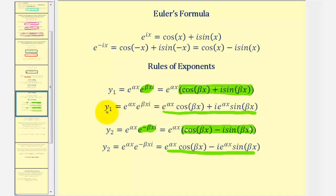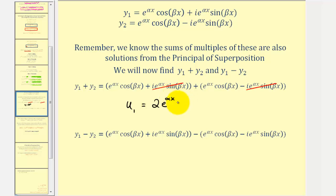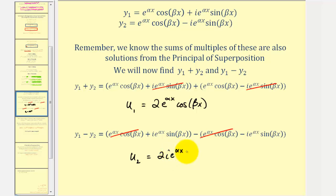Now we'll take this new form of y sub one and y sub two to the next step. We know that sums of multiples of these are also solutions from the principle of superposition. So now we're going to find the sum of y sub one and y sub two and their difference. Looking at the sum first, notice the second terms are opposites, so those two terms have a sum of zero. We'll call the sum of y sub one and y sub two u sub one, which equals two e raised to alpha x cosine beta x. Then finding the difference, the first terms are opposites so their difference is zero, and we're subtracting a negative which becomes plus. We call this u sub two, equal to two i e to the alpha x sine beta x.